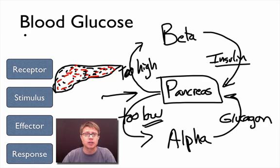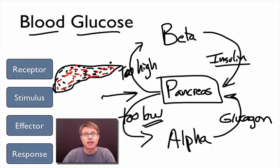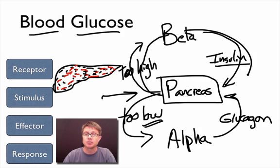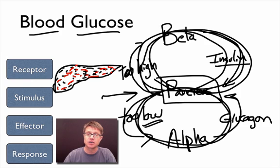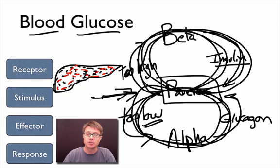If blood glucose goes too low, the alpha cells release glucagon, which triggers the liver to break down glycogen into glucose and release that into the bloodstream. So we have this great feedback loop keeping our blood glucose levels about perfect. It's important because glucose is the fuel — if we can't get fuel to our cells or use too much too quickly, we're out of luck. The whole system keeps us close to that blood glucose set point.